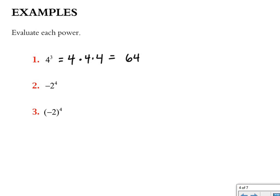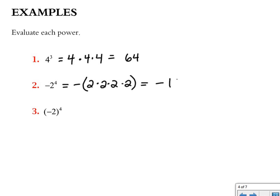In example 2, I have negative 2 to the fourth power. The negative is not in parentheses, which means it's only going to affect my final answer. I write this as negative quantity 2 times 2 times 2 times 2. The base is just a positive 2. Doing 2 times 2 times 2 times 2 gives 16, and then the negative affects that final answer: negative 16.